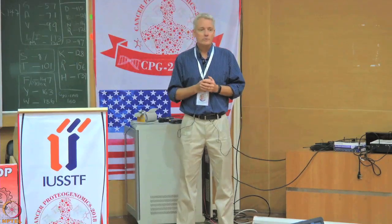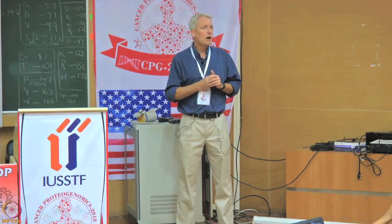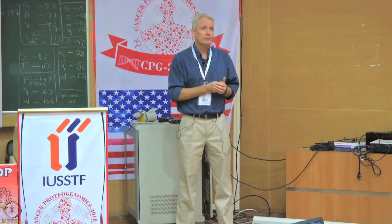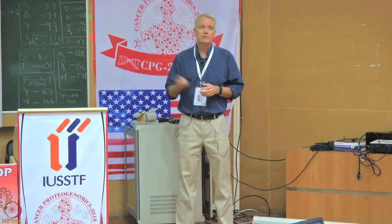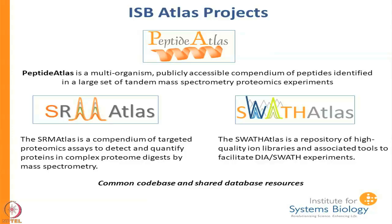If you want to do proteogenomics and you do not have the know-how to analyze certain cell types, you can get some expression data directly from Peptide Atlas that may be useful. Peptide Atlas is the umbrella service here at ISB. There is also SRM Atlas, where we have similarly taken SRM data from various labs, compiled it, and made it available with an interface so people can look at it.